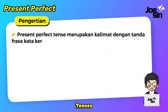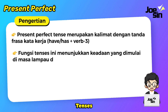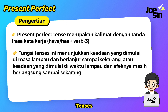Present perfect tense itu merupakan kalimat dengan tanda — ada tandanya — frasa kata kerja. Jadi bukan kata kerjanya saja, melainkan frasa — dua kata. Yaitu have or has, lalu kemudian ditambahkan verb three. Verb three bisa kalian cek penjelasannya di link di deskripsi. Dan fungsi tenses ini pada umumnya menunjukkan keadaan yang dimulai di masa lampau dan berlanjut sampai sekarang, atau efeknya masih berlangsung sampai sekarang. Gampangnya kita kasih tanda sudah.